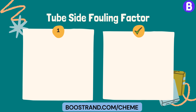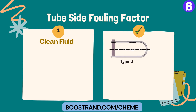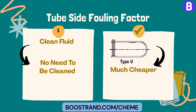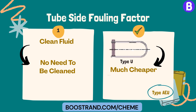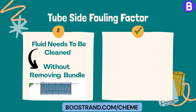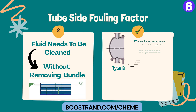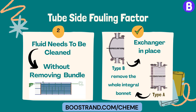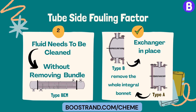If the fluid in the tube side is a clean fluid — a famous example is steam — we can choose a U type for the rear head. It's much cheaper and there is no need to clean it. So depending on the fouling resistance of the shell side, the Temer type can be AEU or BEU. If the fluid in the tube side needs to be cleaned, this can be done without removing the tube bundle. Even with Type B, we can clean the tube side with the exchanger in place, but we would remove the whole integral bonnet instead of just removing the channel cover as in Type A. Here we can choose a Temer type of BEL or BEM.